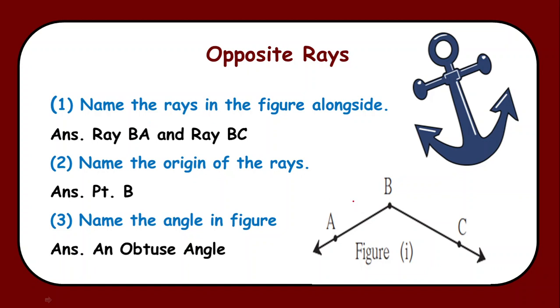Children, firstly let's see what is meant by a ray. A ray starts with a point and it ends with an arrow, and this arrow shows that its end is never ending or it says that you can stretch it far. Now children see, here in the figure we are able to see two rays, one is ray BA and another one is ray BC.